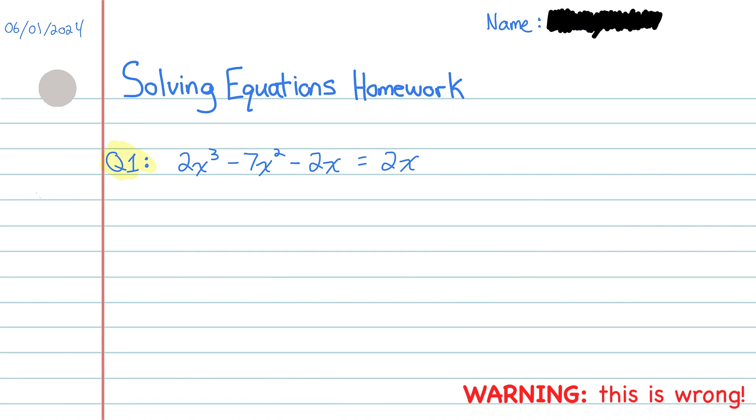Here's question 1 of the solving equations homework. I need to find the solutions for x that make this equation true. The first thing I notice is that all of the terms on both sides of the equation have an x, so I'll divide both sides by x to simplify this. When I divide all the terms on the left by x, I get 2x² - 7x - 2. And on the right, the x's cancel, I just have 2.